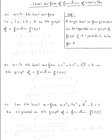The topic is level surfaces of functions of three variables. Let's do the first example: write the level surface 3x + 5y - 2z = 8 as the graph of a function f of x, y. Let's look at the definition.